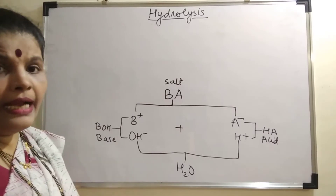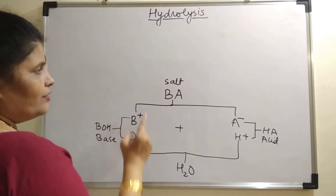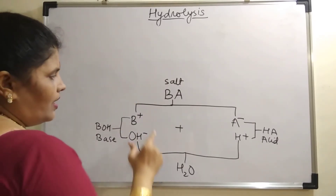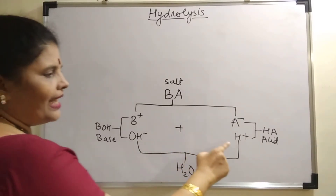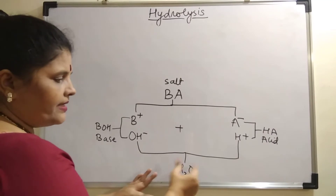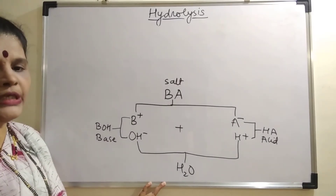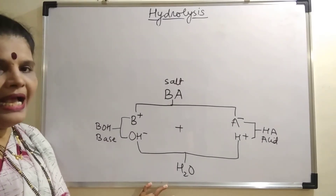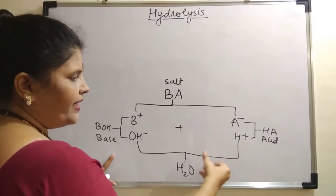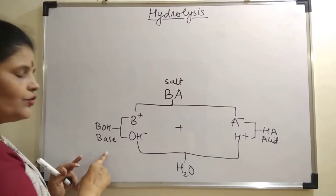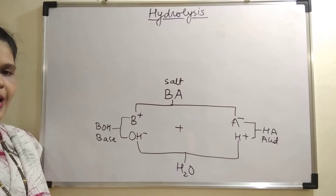Now on this particular chart, we can define what hydrolysis is. Hydrolysis is a process in which the cation and the anion of the salt combine with the hydroxyl and H⁺ ions of water to give acidity, alkalinity, or sometimes neutrality to the solution. If the acid formed is strong, it gives acidity; if the base is strong, it gives alkalinity; and if both are of nearly equal strength, the solution is neutral.